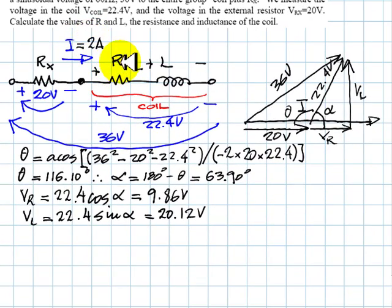But we know what is the voltage in R. It's 9.86 volts. And we know the current is 2 amps. We can use Ohm's law to find what is R. That resistance is 9.86 volts divided by 2 amps, 4.93 ohms.